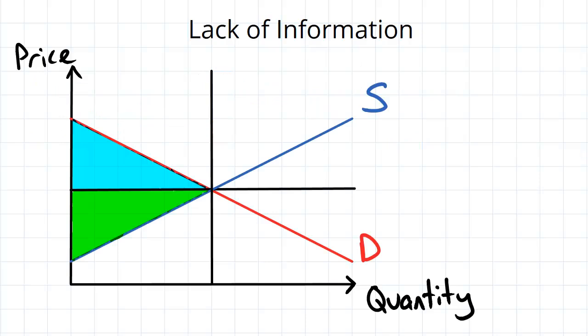So to see how a lack of information is a form of market failure, let's first consider the case where there's not a lack of information. If we're at market equilibrium, we assume pretty much perfect markets with all the information we need. We know that our surplus looks something like this.